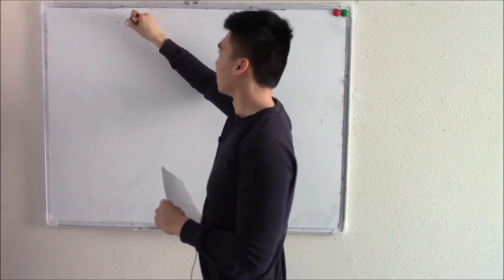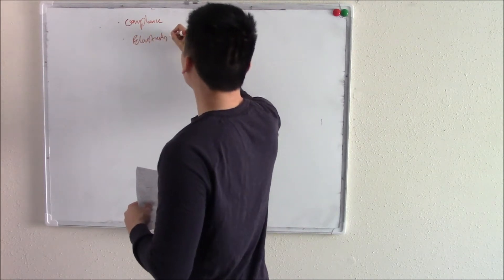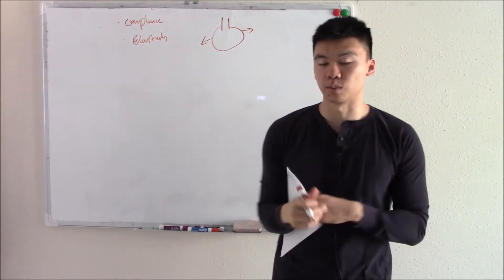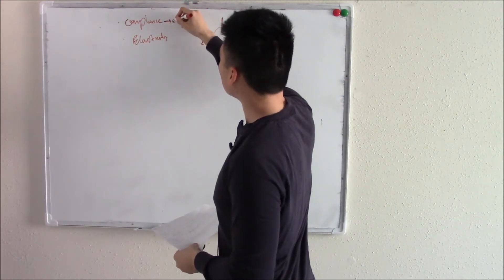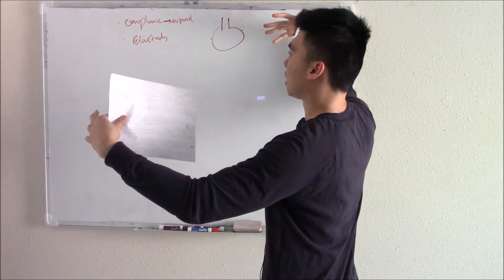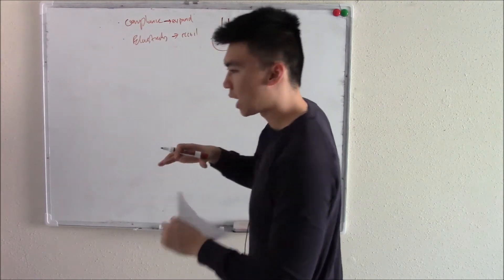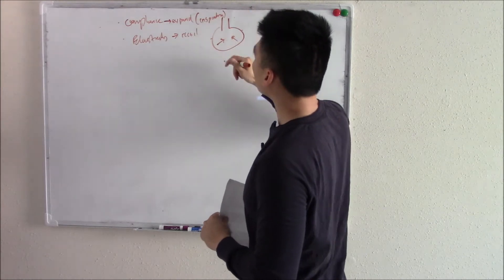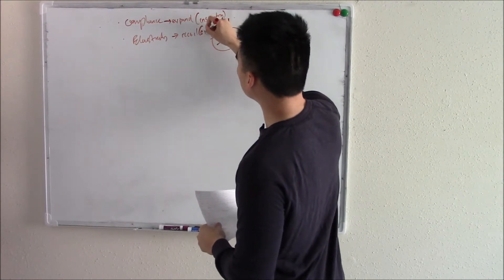Some terminology I want you to know is compliance and elasticity. When you take a deep breath in, your alveoli will expand. Your alveoli are like a rubber band — they can expand and then recoil. When they expand, we call that compliance. And when you take a deep breath out, your alveoli recoil — we call that elasticity. So compliance is an expansion, an inspiratory term. Elasticity is when you recoil — an expiratory term when you're taking a deep breath out.